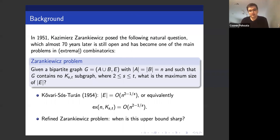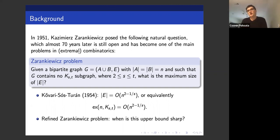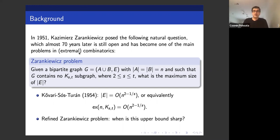Before I begin to tell you about the Erdős Box Problem, I'd like to collect a few things about the motivating question in low uniformity — the celebrated Zarankiewicz problem, which was posed by Zarankiewicz himself in 1951, in the early days of extremal graph theory. It has arguably become one of the main problems in extremal combinatorics. The question is: given a bipartite graph G with n vertices on each side containing no copy of the complete bipartite graph K_{s,t}, what is the maximum size of the edge set?